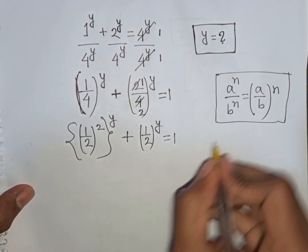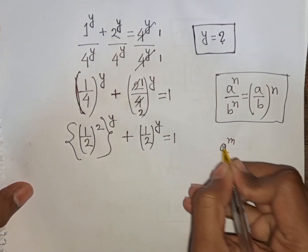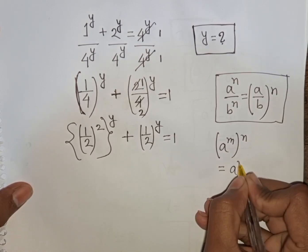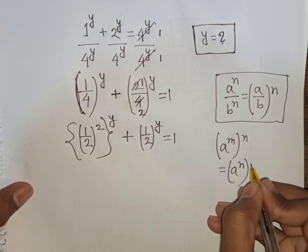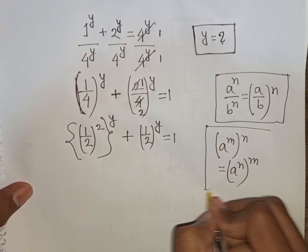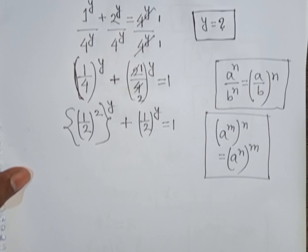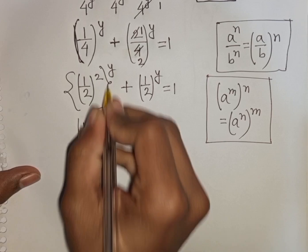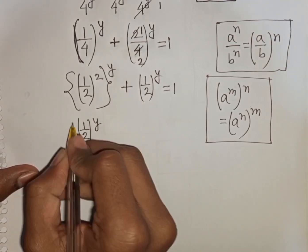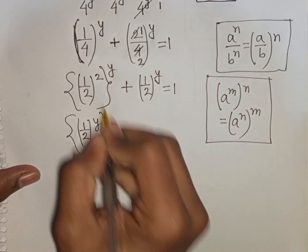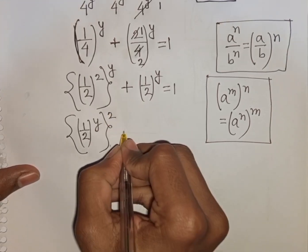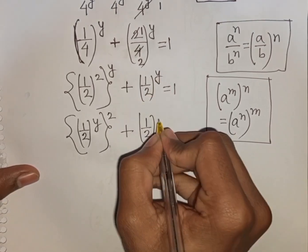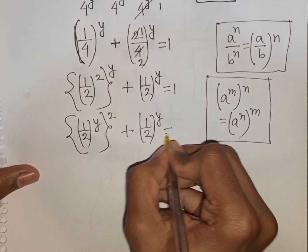Now here we apply the exponential rule that (a power m) power n is equal to (a power n) power m. So according to this rule we can write (1 over 2) power y, power y plus (1 over 2) power y is equal to 1.